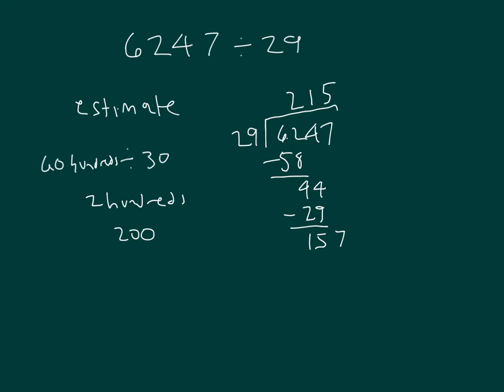Which is five. Five times nine is forty-five — five, regroup of four. Five times two is ten, plus four is fourteen. And then we can subtract that. So our remainder is twelve.